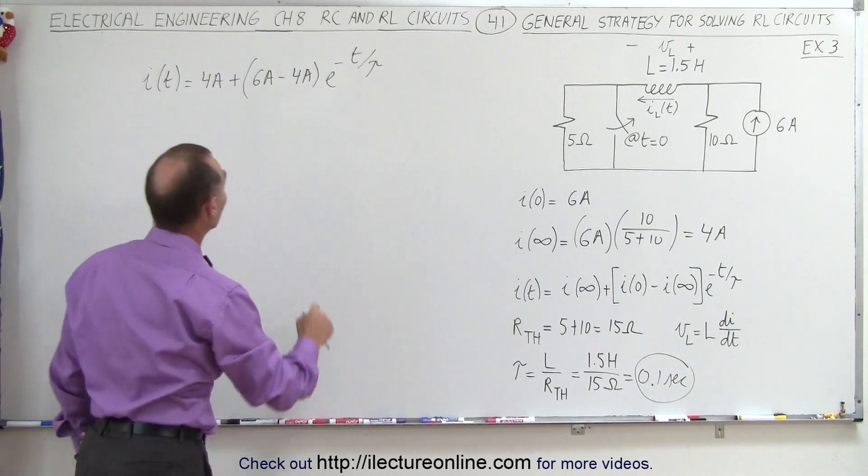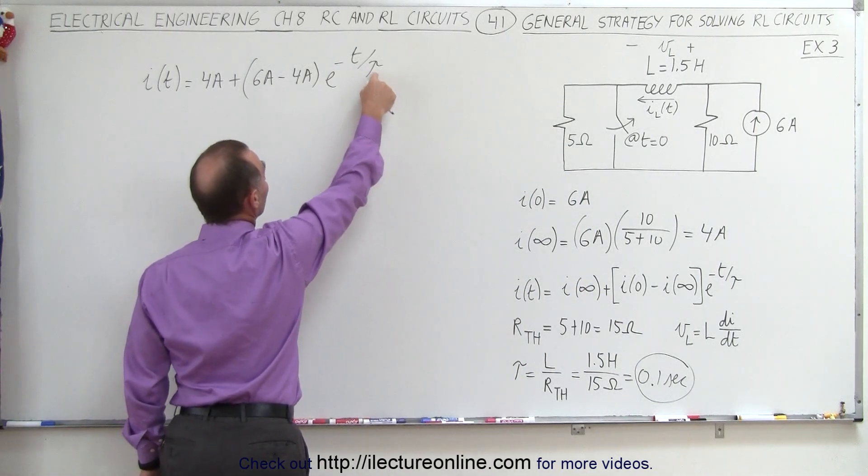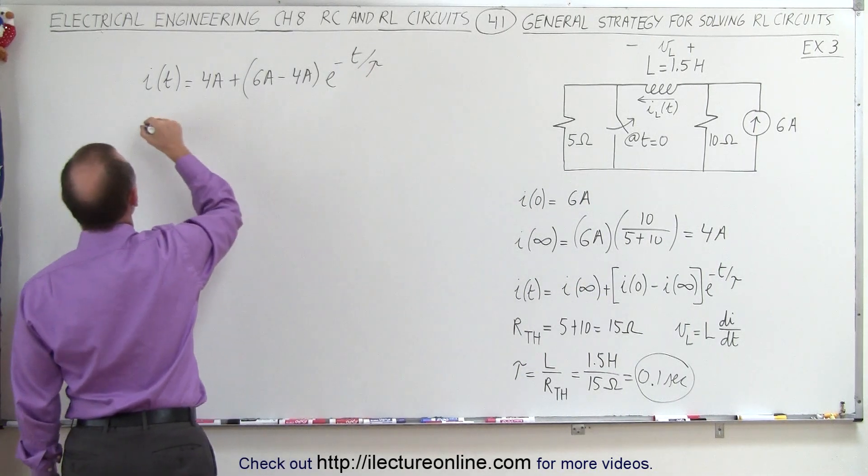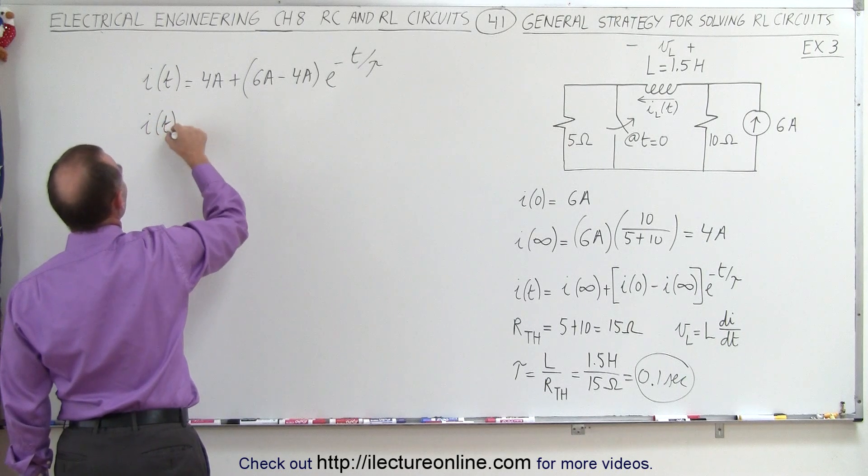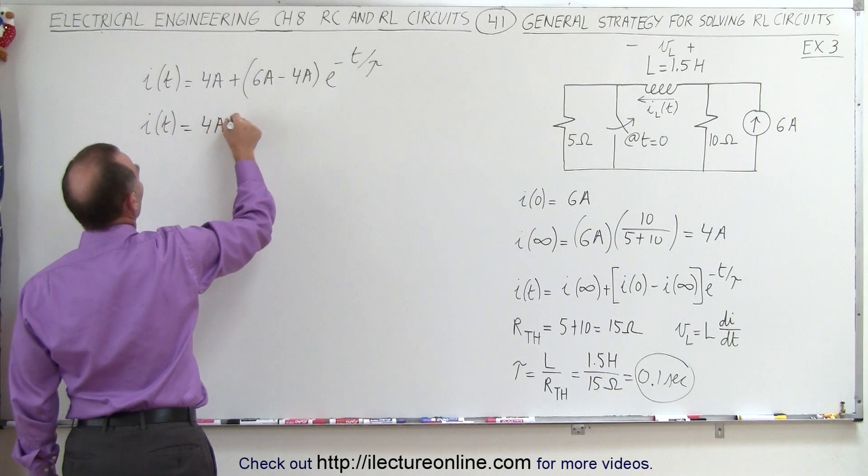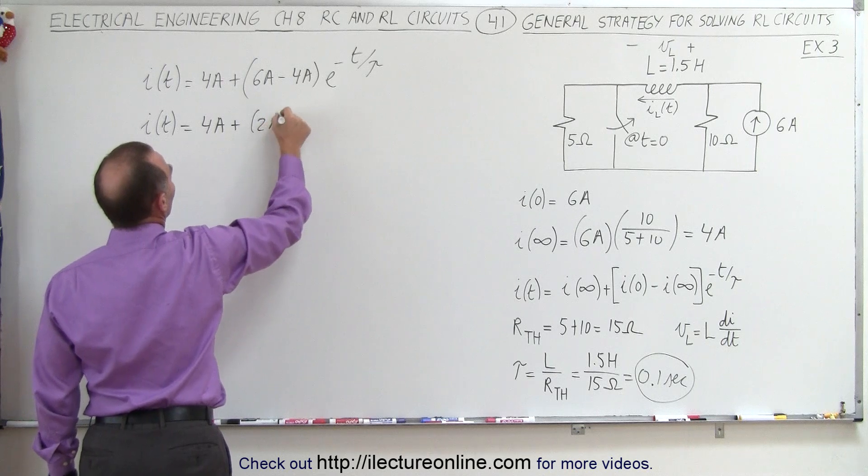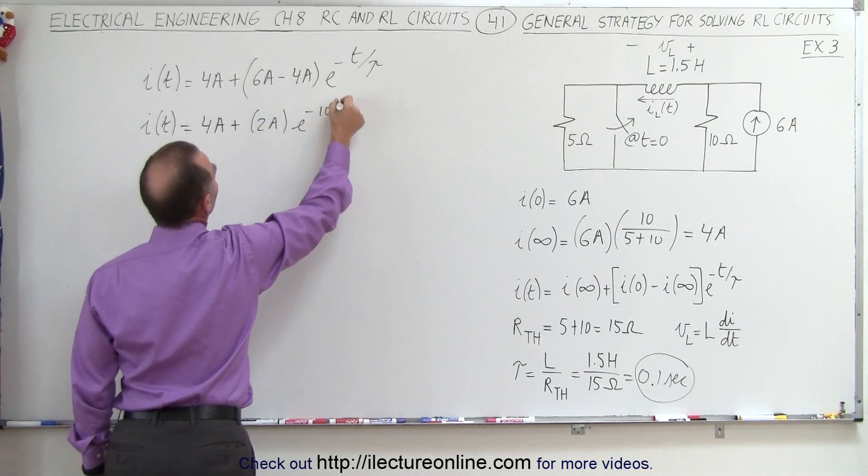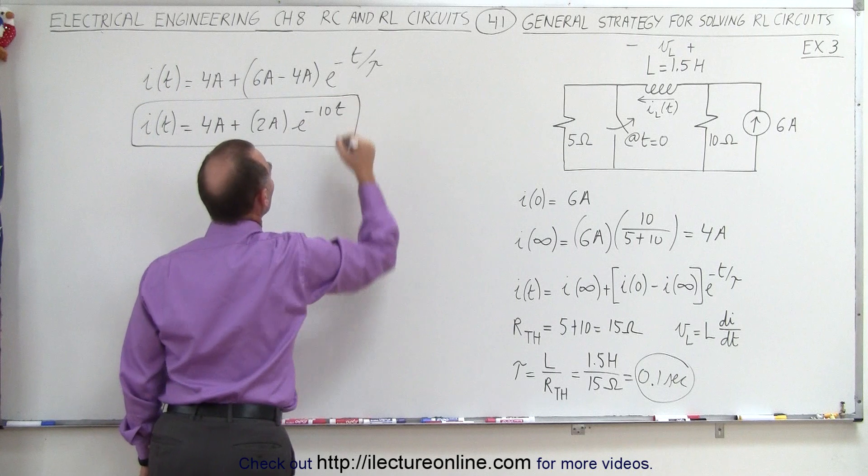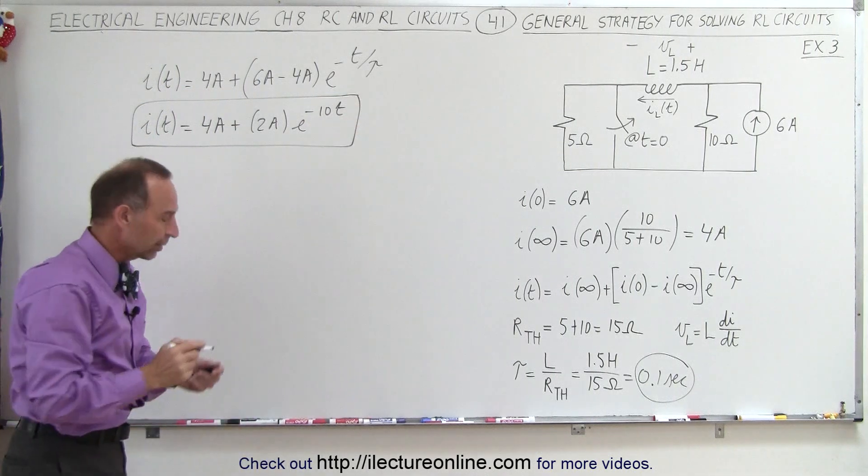So now that I have the time constant, since we're dividing by the time constant this will be minus 10T, so the current as a function of time becomes 4 amps plus 2 amps times e to the minus 10 times T, and that's the current through the inductor through that transition period.